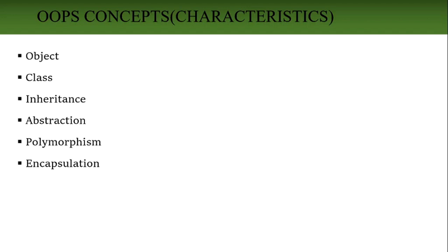In the class, we define the data members and member functions — that is, the attributes and functionalities of the objects. So we can say class is a structure in which we define the attributes and functionalities of the object. This is about class and objects.